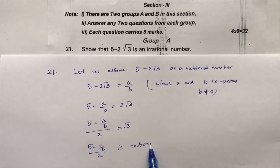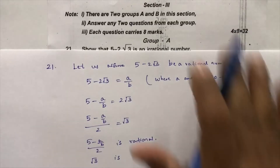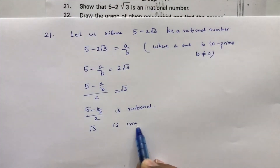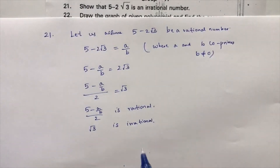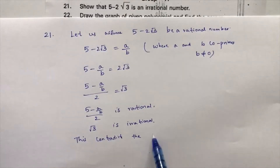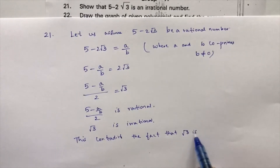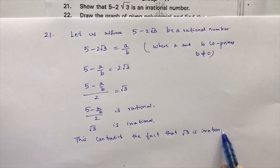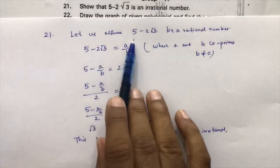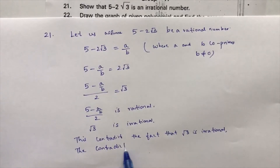So root 3 is rational. But this contradicts the fact that root 3 is irrational. The contradiction arises by assuming that 5 minus 2 root 3 is rational.